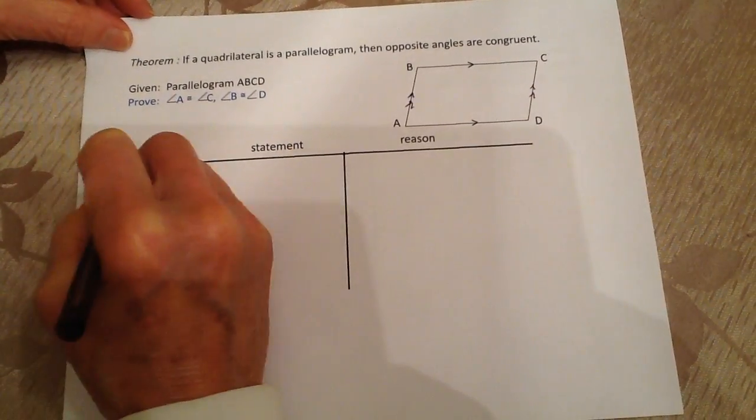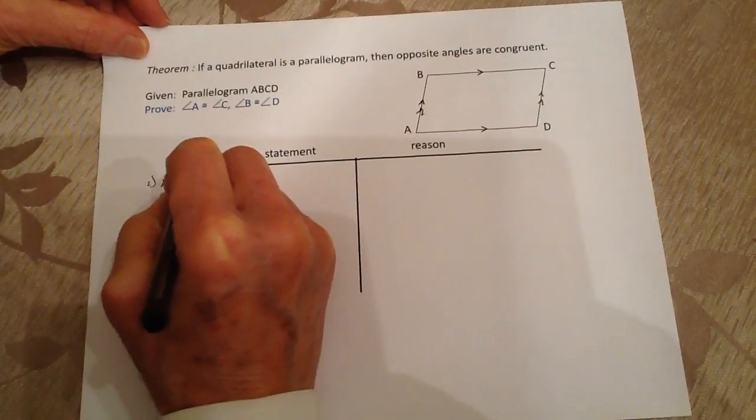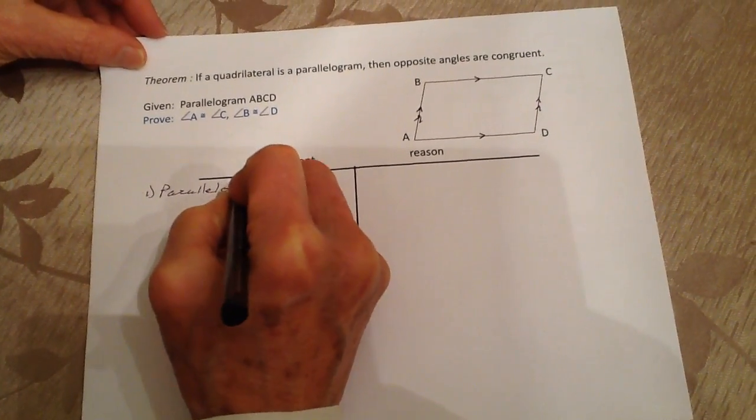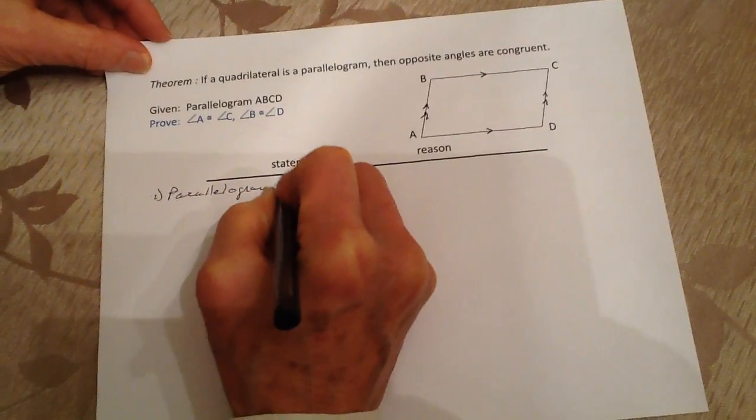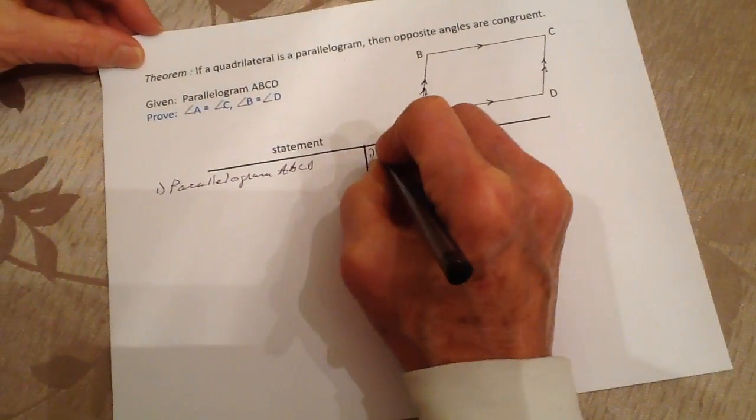First thing is statement one: we have parallelogram ABCD. That's given.